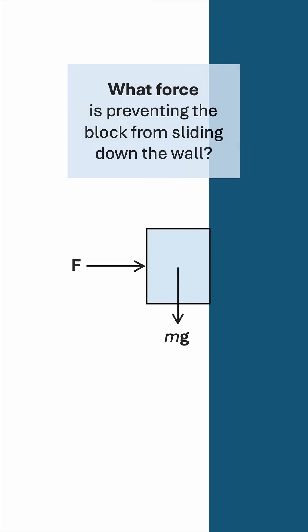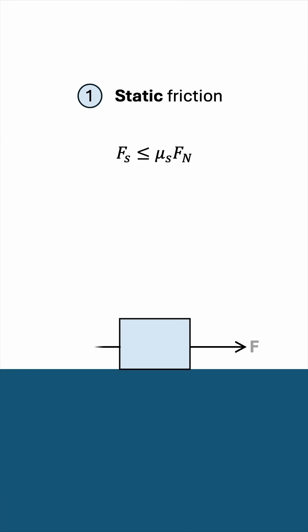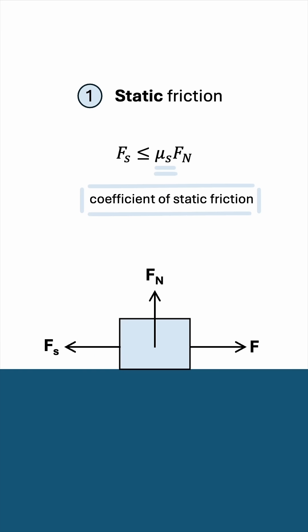The answer is friction, of which there are two types. Number one, static friction is when there's no motion yet. Static friction is denoted by Fs, and it's limited by a maximum of μs times Fn. Fn being the normal reaction force applied by the surface on the block, or any other object for that matter. μs is what we call the coefficient of static friction, basically a measure of how rough the surface is.